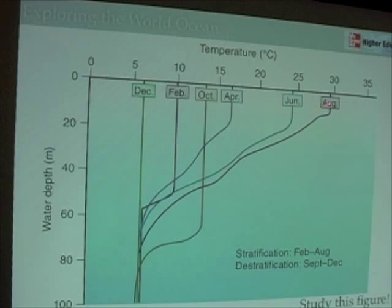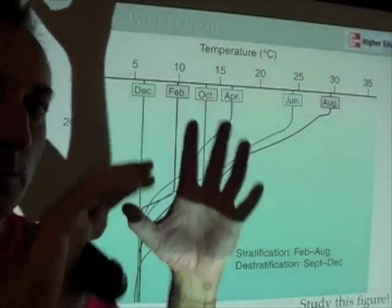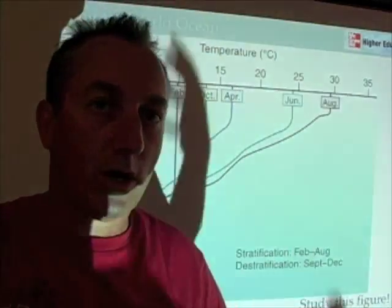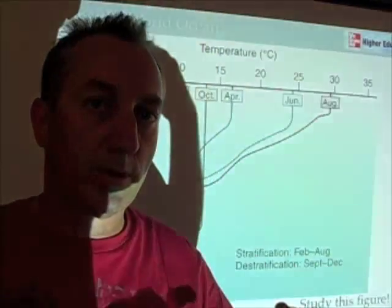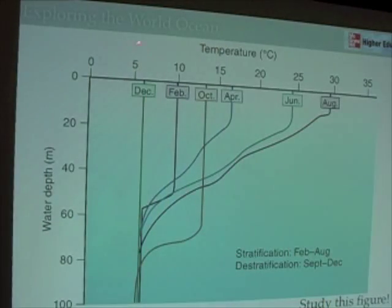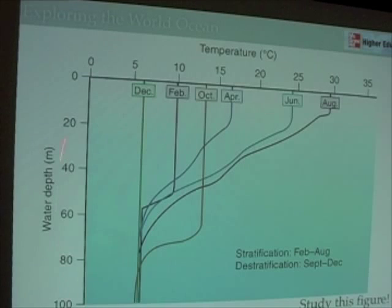We create a thermocline — that's called stratification. We break that down by cooling surface waters, creating more dense water that is negatively buoyant, sinks, and mixes the water column up, making a deeper thermocline — that's destratification. We're taking the layers away. By December, there are no layers at all, because that cold, dense water is sinking and creating mixing that mixes up the entire water column.